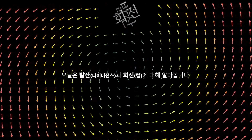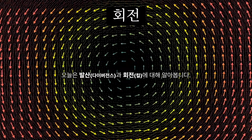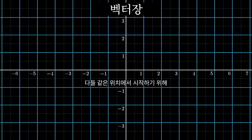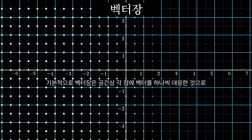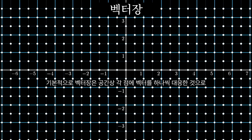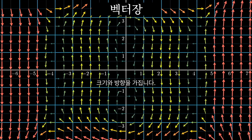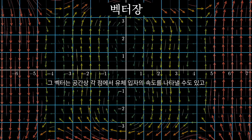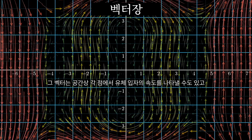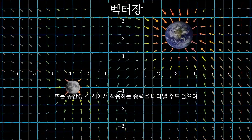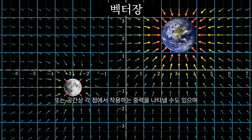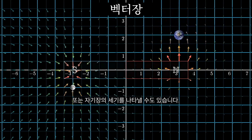Today, you and I are going to get into divergence and curl. To make sure we're all on the same page, let's begin by talking about vector fields. Essentially, a vector field is what you get if you associate each point in space with a vector — some magnitude and direction. Maybe those vectors represent the velocities of particles of fluid at each point in space, or maybe they represent the force of gravity, or a magnetic field strength.